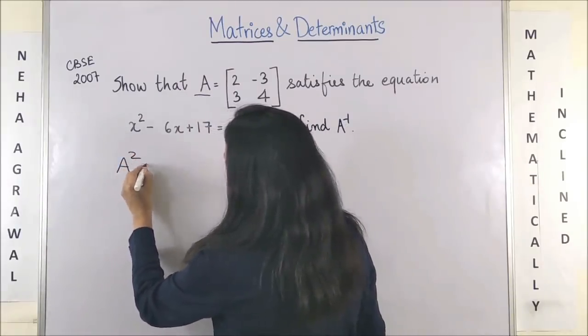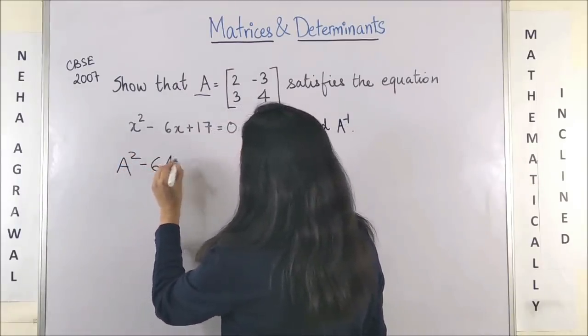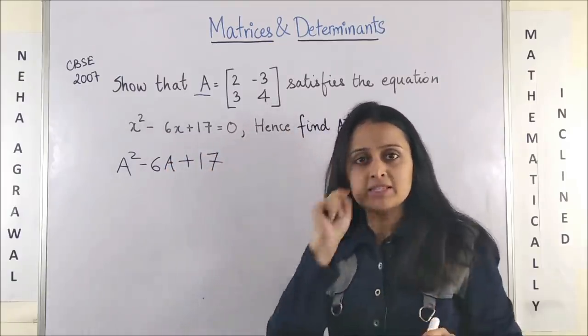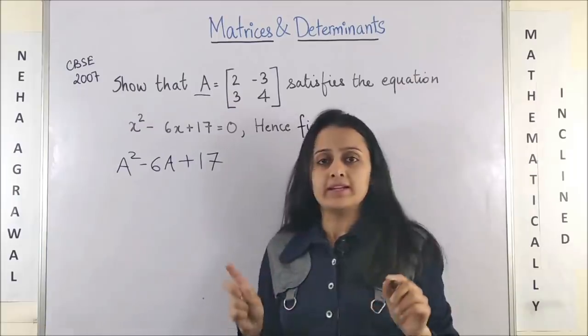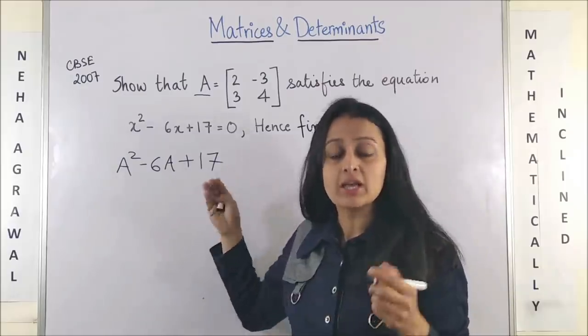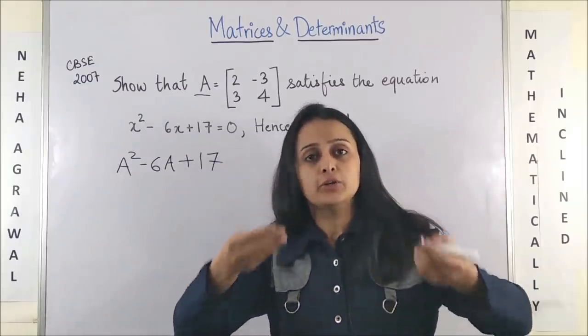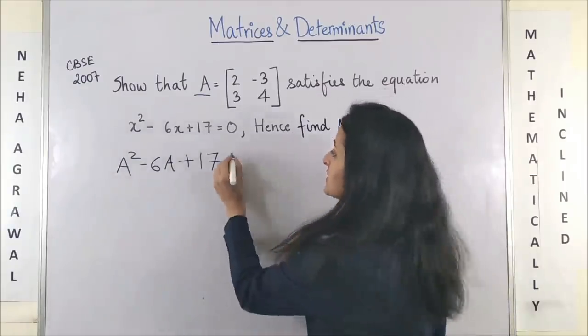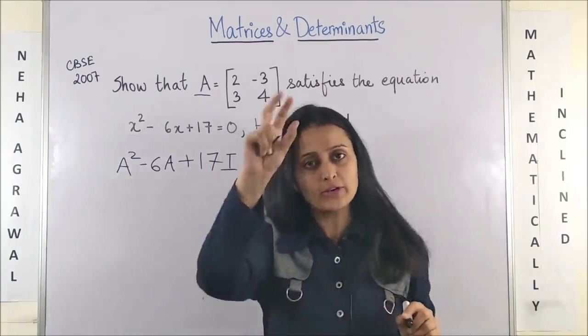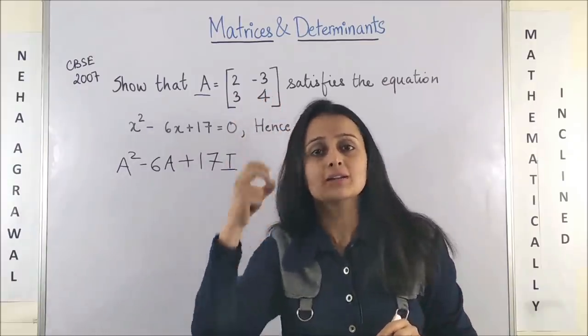You have to show A² - 6A + 17. A first mistake - people end up writing 17. It should be - the moment you convert a polynomial equation into the matrix format, this 17 can't be alone. It has to be with I. So any constant, put an identity matrix with it.